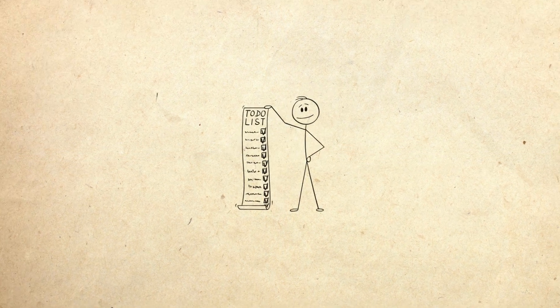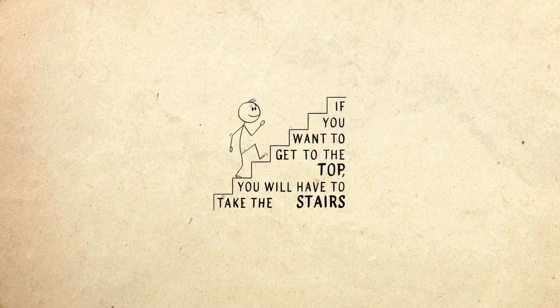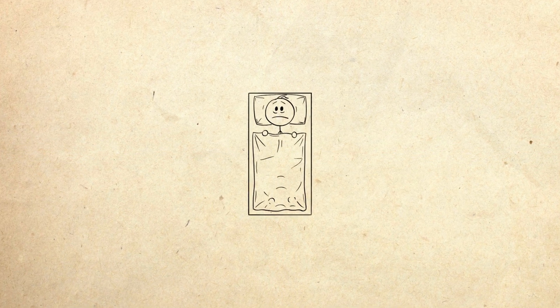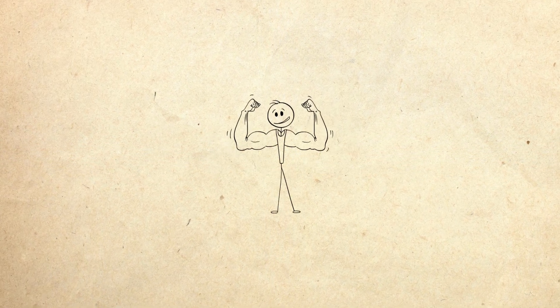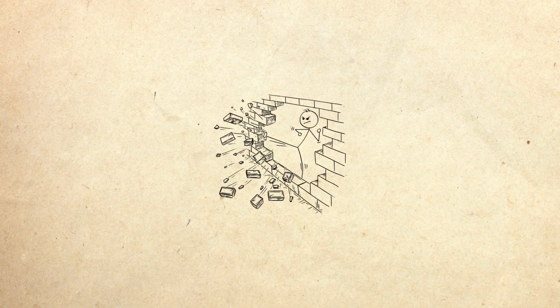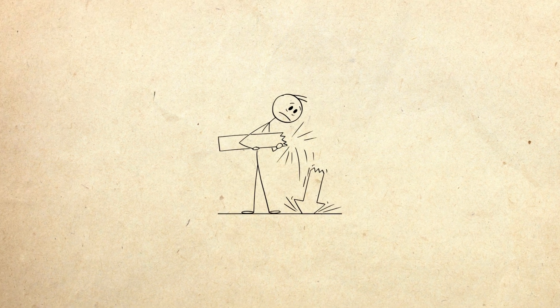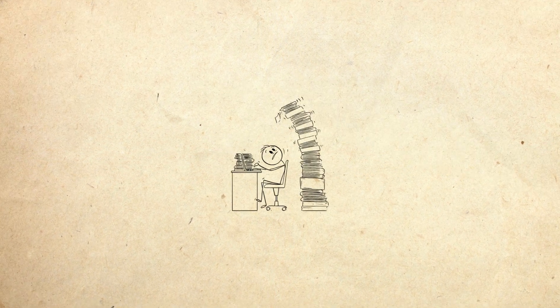Rule 1: Stop stacking dopamine. Don't mix high-reward stimuli. Don't scroll while eating. Don't work while gaming music and energy drinks. Each layer robs the next of its power. Rule 2: Allow boredom. It's not something to escape. It's the doorway back to clarity. When dopamine resets, you regain the ability to enjoy simple things.